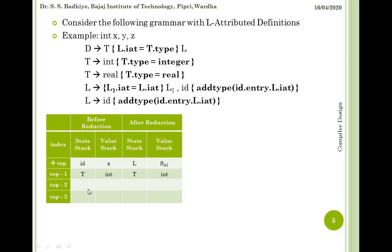Let us parse the string 'int x, y, z' through a bottom-up parser using a stack. First, 'int' will be on the value stack and T on the state stack after 'int' is reduced to T. Then 'x' will be on top of the value stack when the state stack has 'id'. This id is a handle so it will be reduced to L by the rule L derives to id, making an entry in the symbol table for the type of x, which it gets as 'int' from just below L on the value stack.